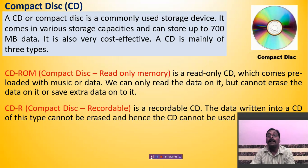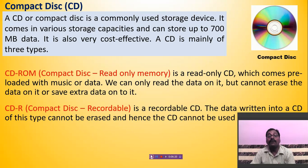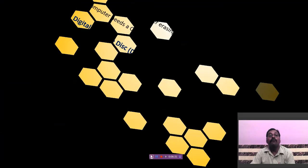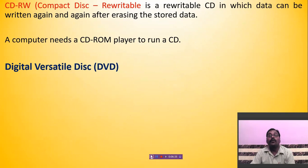You cannot erase the data or save extra data onto a CD-ROM. The second type of CD is CD-R, which stands for Compact Disk Recordable. It is a recordable CD, but the data written onto a CD-R cannot be erased. Once data is recorded or saved on this type of CD, it cannot be erased.